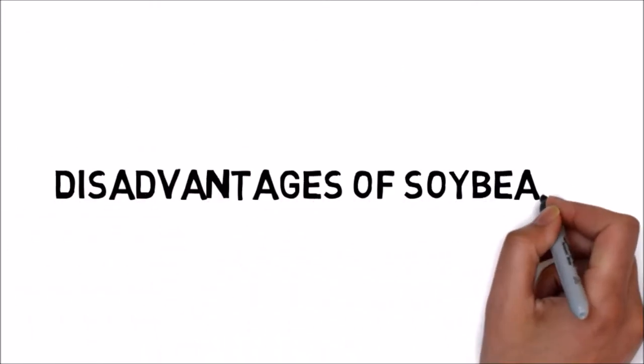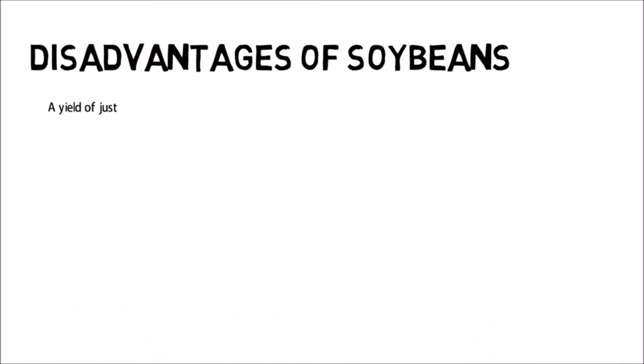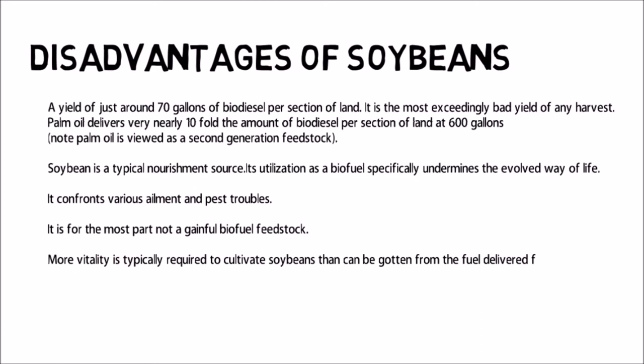The disadvantages of soybeans include: A yield of just around 70 gallons of biodiesel per section of land. It is the most exceedingly bad yield of any harvest. Palm oil delivers very nearly ten-fold the amount of biodiesel per section of land at 600 gallons. Note palm oil is viewed as a second-generation feedstock.